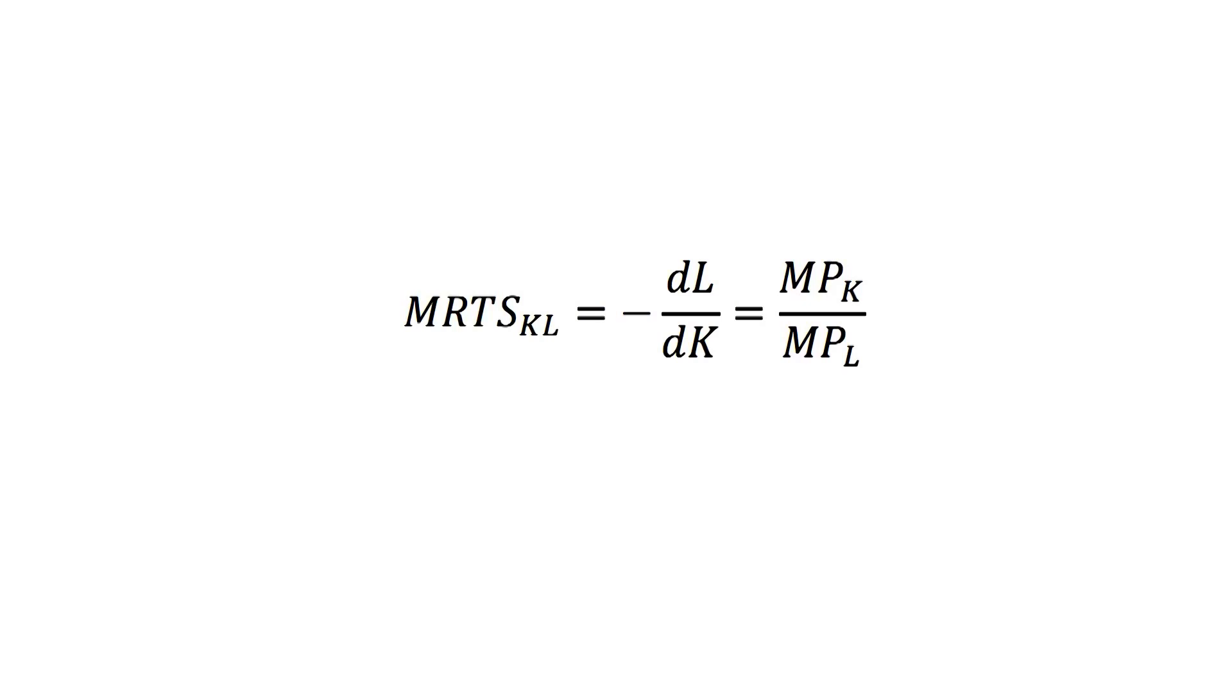It is negative because the marginal rate of technical substitution corresponds to the slope of the isoquants, which have a decreasing slope.